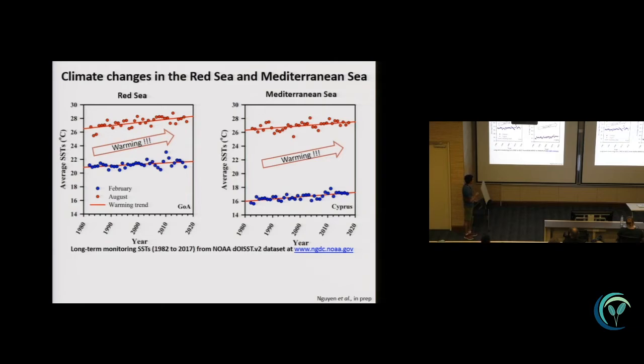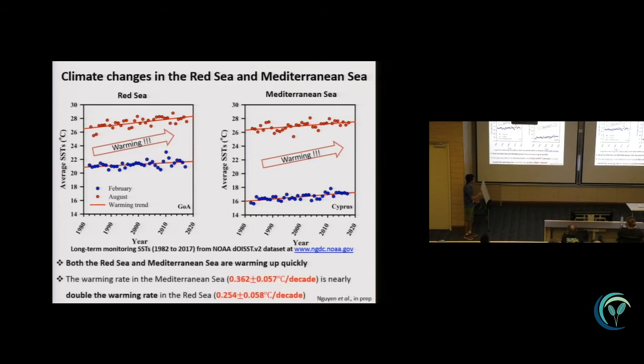We have the rates of warming in the Mediterranean Sea double the amount of the Red Sea. We have Halophila stipulacea native to the Red Sea playing very important functions in the region, but in the Mediterranean Sea, they are considered a very potential harmful invasive seagrass species.